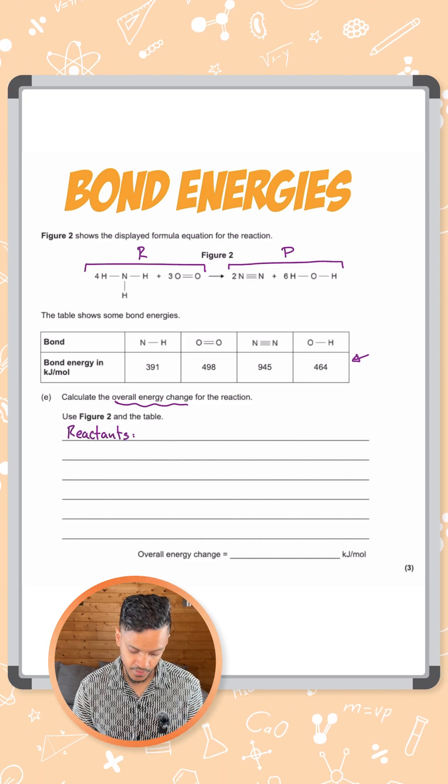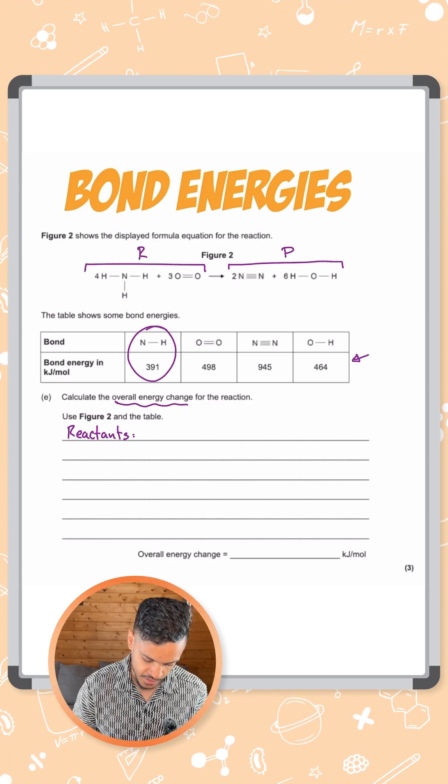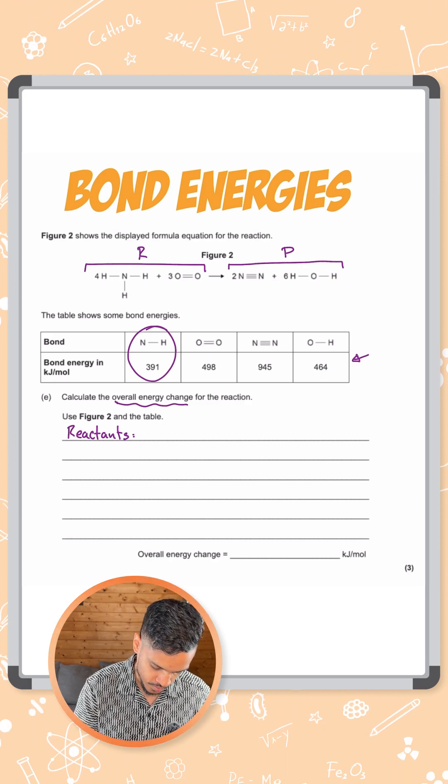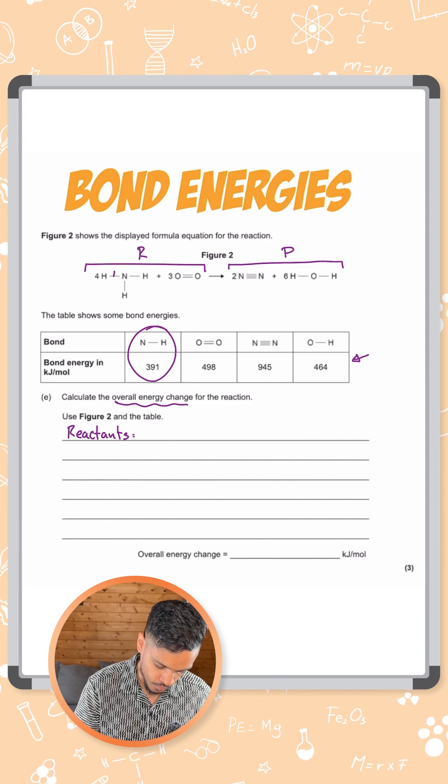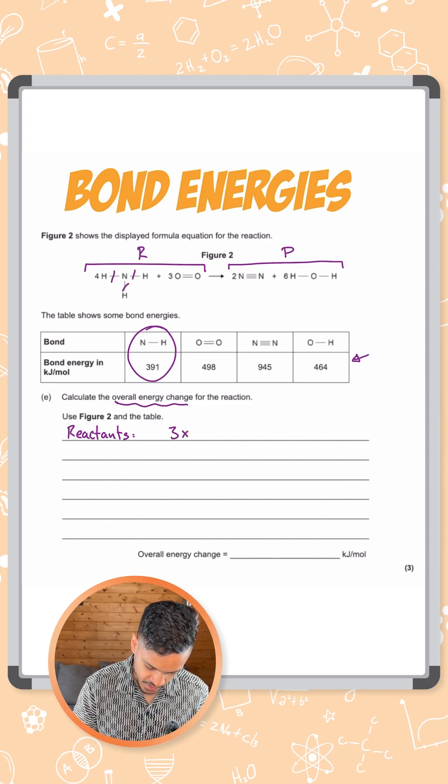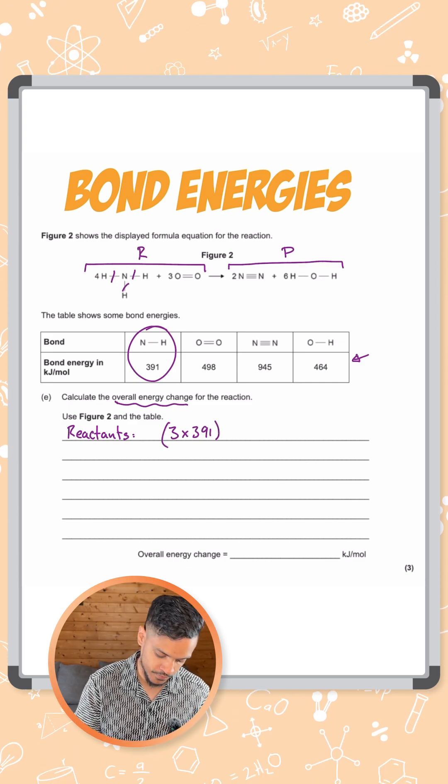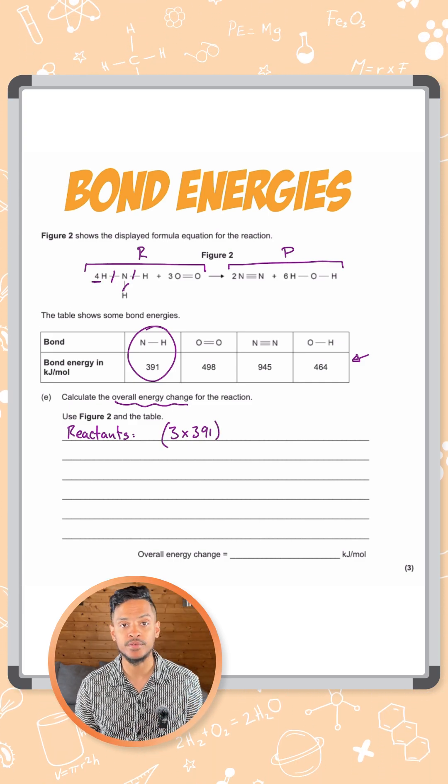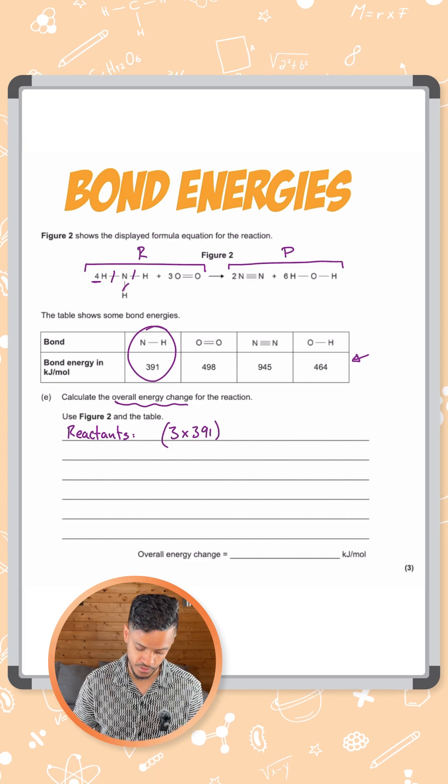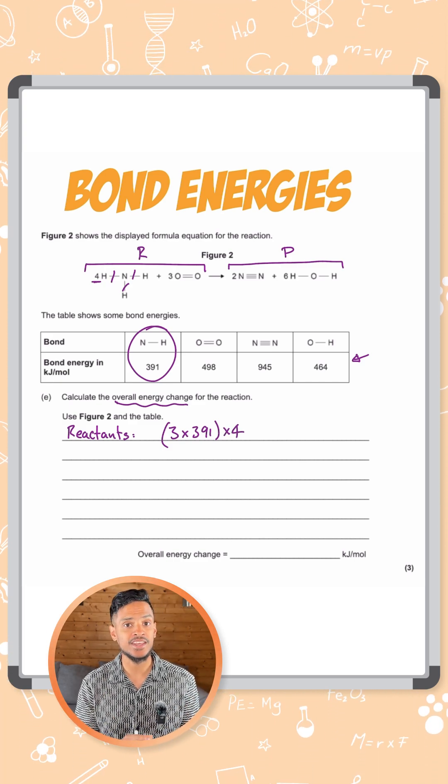The first type of bond we have are N-H bonds which are 391 kilojoules per mole. Let's count how many we have here. We've got one, two, three. So we can do three times 391 but we have a big four in front of that. So don't forget that big four there tells us we've got four lots of three. So we multiply that by four. That's the NH bonds done.